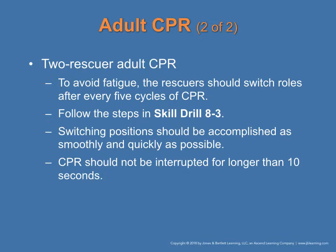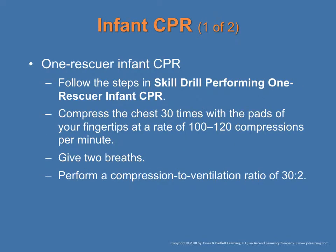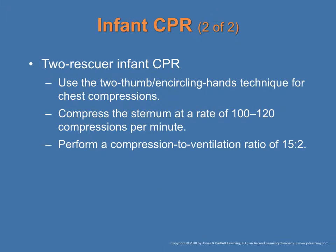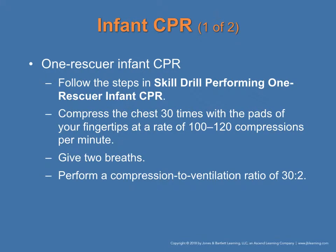You must deliver chest compressions and rescue breathing at a ratio of 30 to 2. If you are by yourself performing CPR, compress 30 times then give two rescue breaths and continue. If there are two rescuers, alternate every five cycles to avoid fatigue. For an infant, compress the chest 30 times with fingertips at a rate of 100 to 120 compressions per minute and give two rescue breaths. With two rescuers doing infant CPR, use the two-thumb technique — the ratio changes to 15 to 2, while the rate remains 100 to 120.